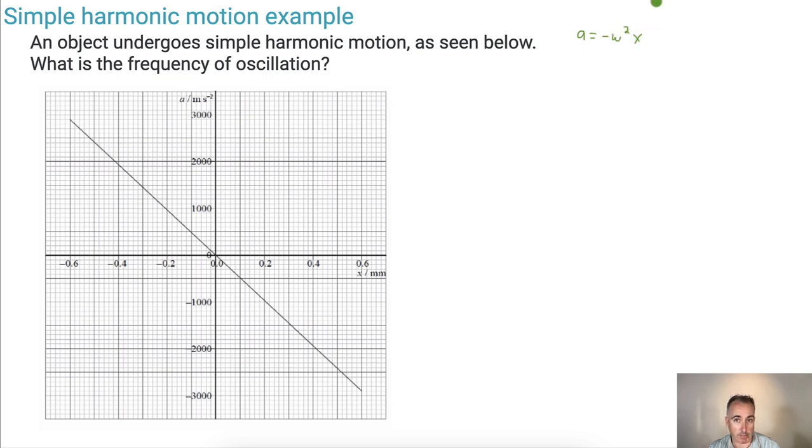Remember what happens when we graph A versus X, which is what we have here. We can linearize it. This right here is going to be your gradient. We can ignore the negative part because we've already accounted for it with this negative graph. That's the gradient because this is the Y and that's the X value. So the absolute value of the gradient equals omega squared.